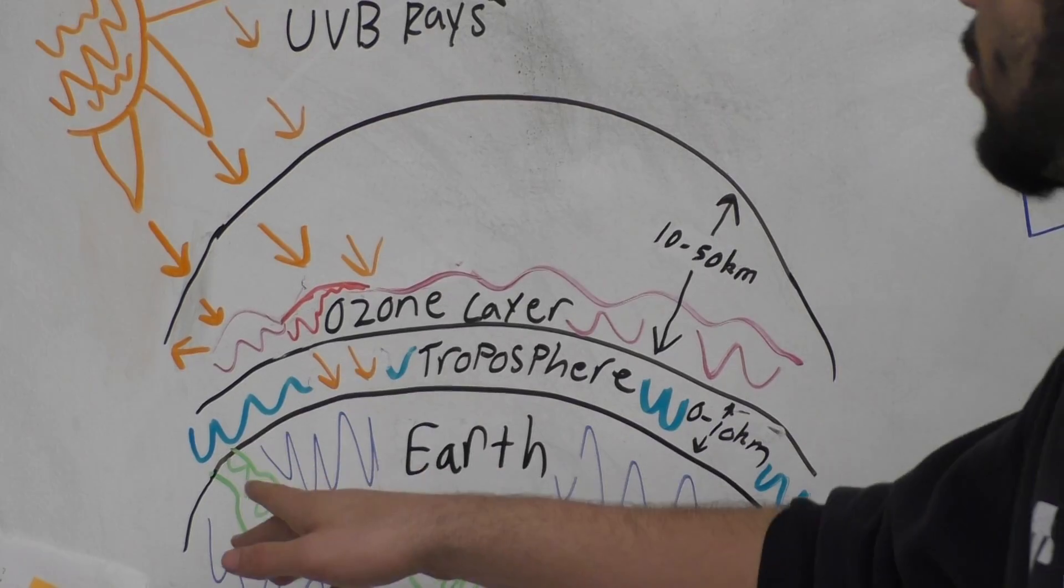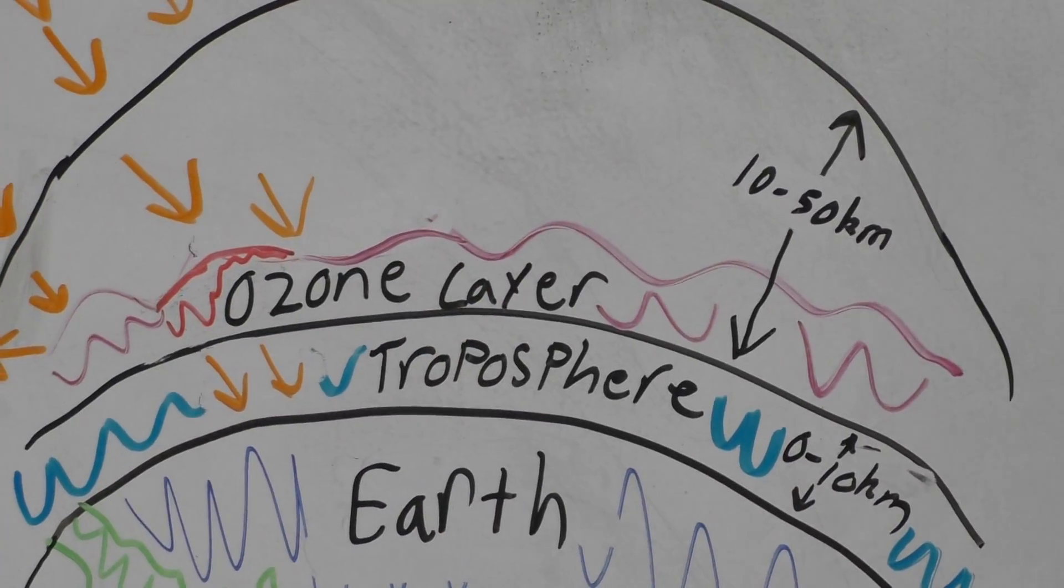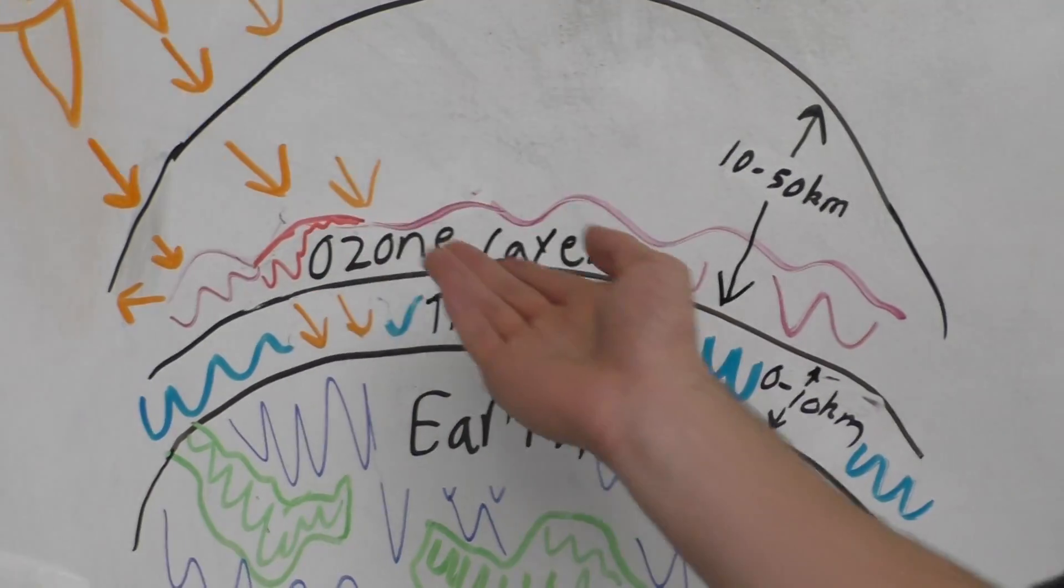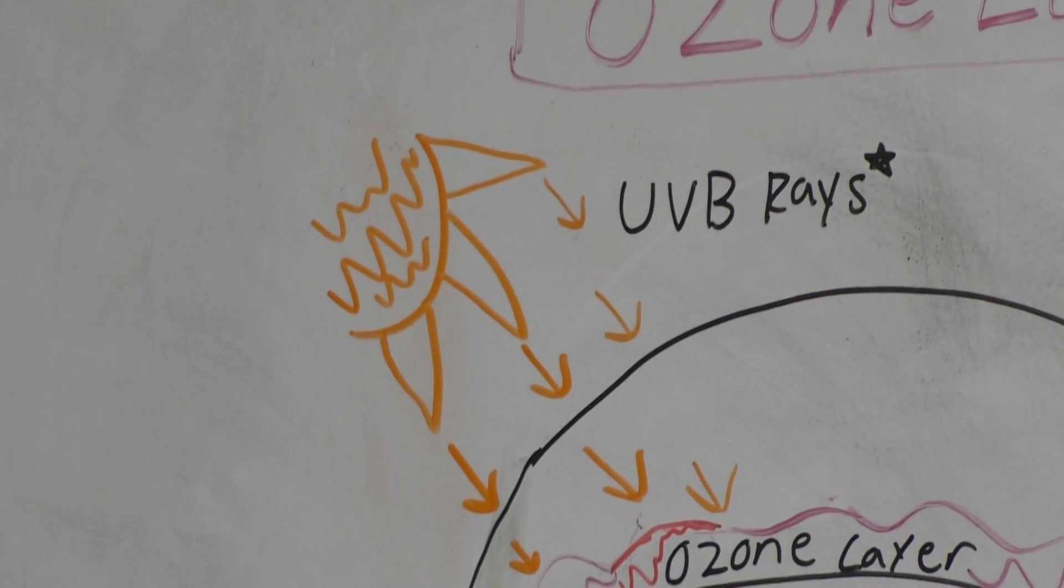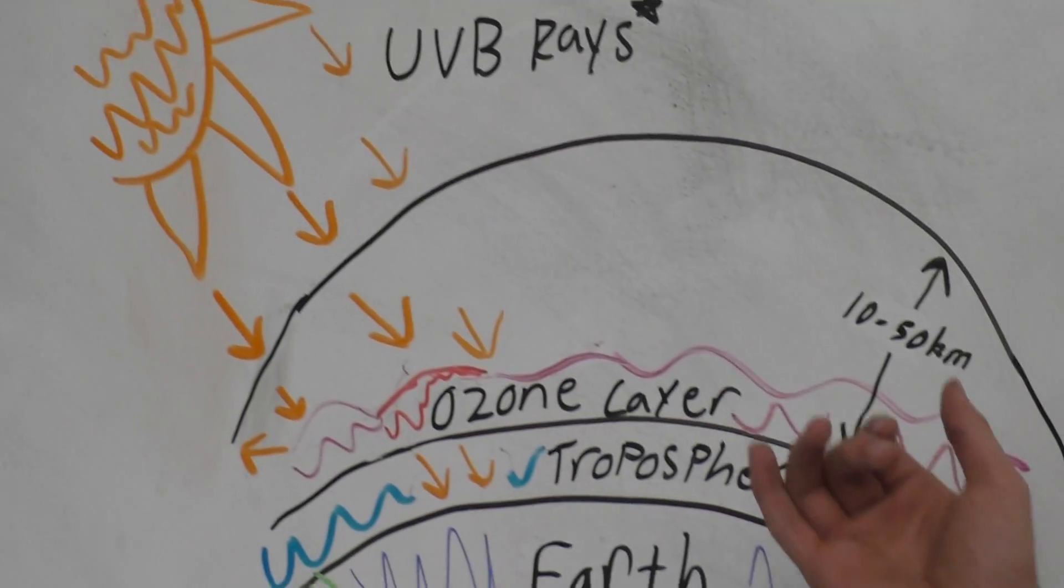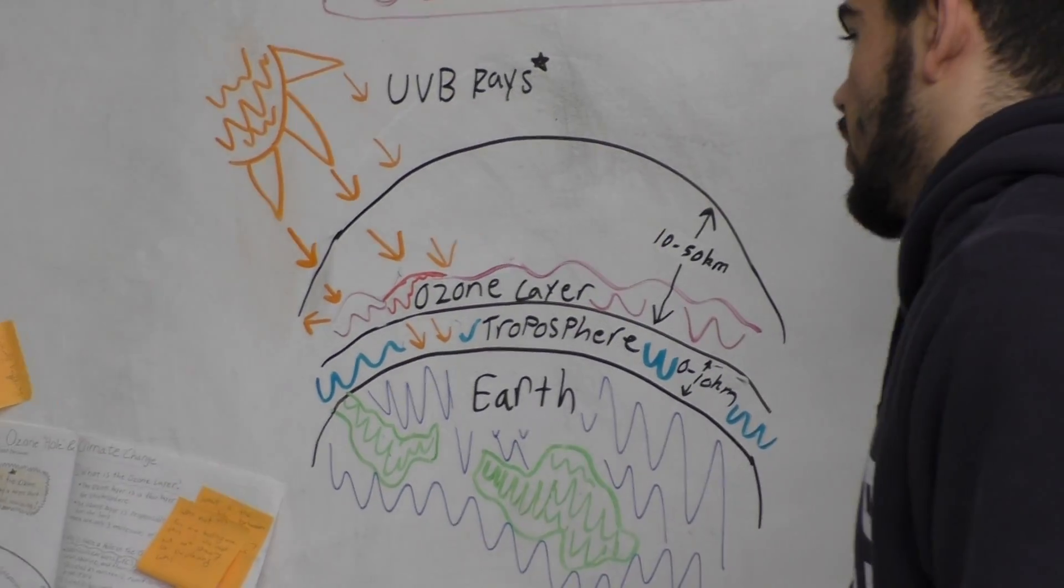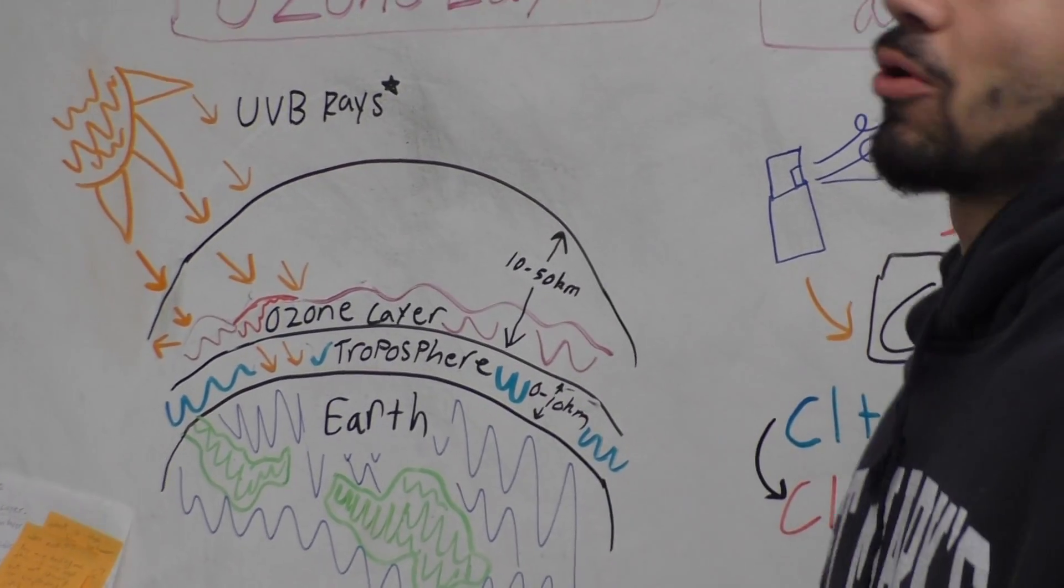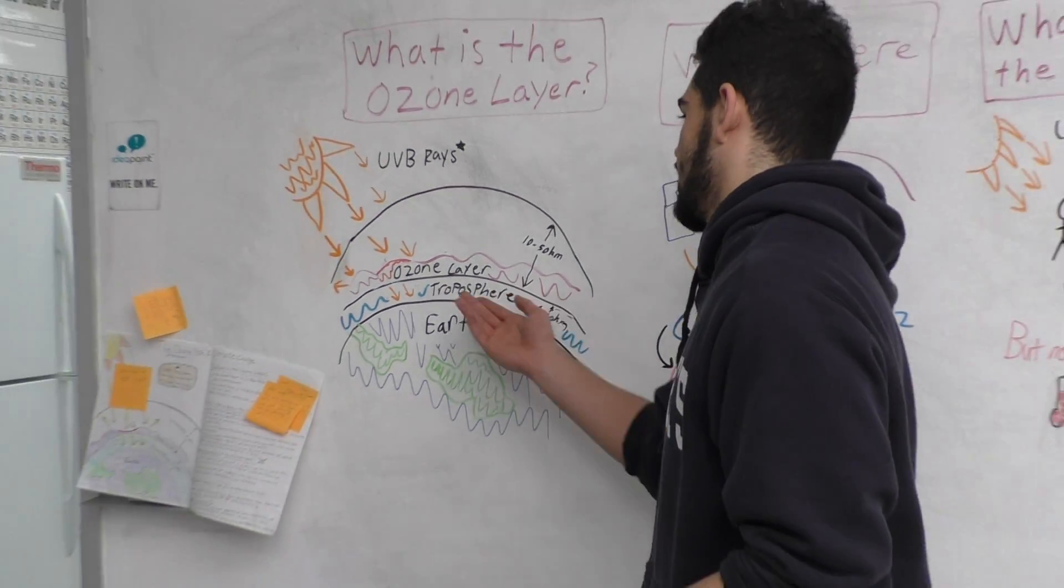Its job is to protect the Earth's surface from these harmful UVB rays that attempt to penetrate the Earth by absorbing these rays with the trioxide, O3, that is inside of the ozone layer.